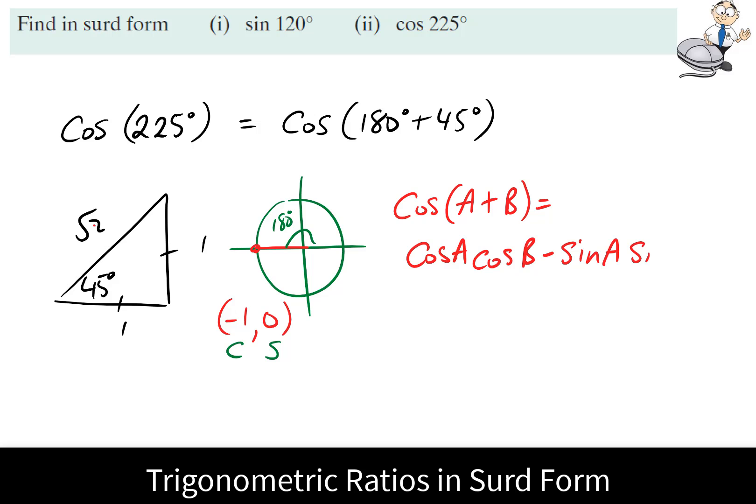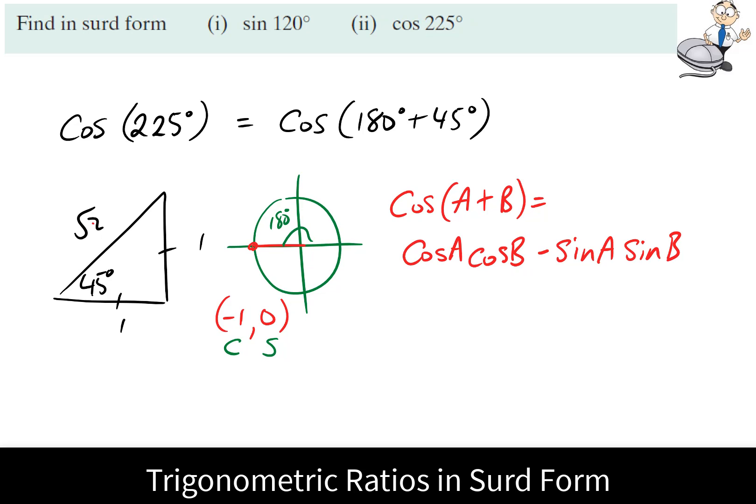In this question, let's call A is 180 degrees and B is 45 degrees. So we're trying to evaluate cos of 180 degrees multiplied by cos 45 degrees, minus sine 180 degrees multiplied by sine of 45 degrees.